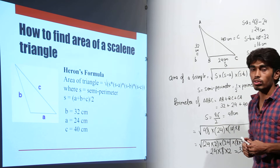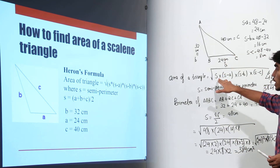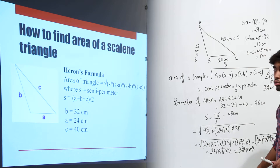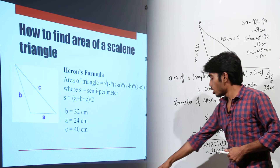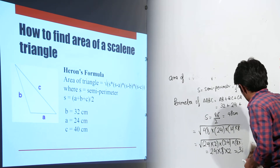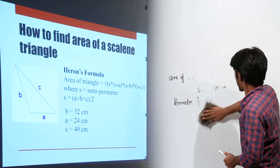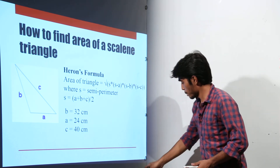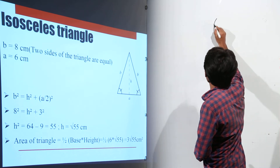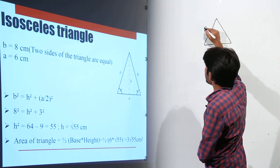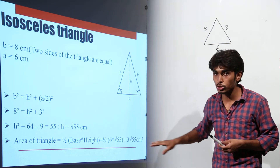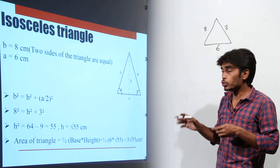We have calculated the area of this scalene triangle and it comes out to be 384 centimeter square. We first calculated S, then S−A, S−B and S−C, and then applied Heron's formula. Now let us verify whether Heron's formula gives the same answer for the isosceles triangle we solved earlier.